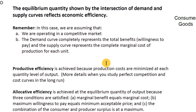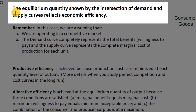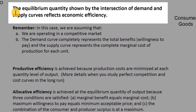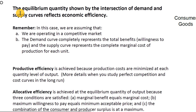After studying supply and demand, production possibilities curves, and consumer and producer surplus, these ideas come together around one of the main big ideas from economics. In a competitive market, the intersection of supply and demand gives us the equilibrium price — where the quantity people want to buy equals the quantity people want to sell. If that equilibrium quantity is what we produce, we can show this is an efficient outcome.